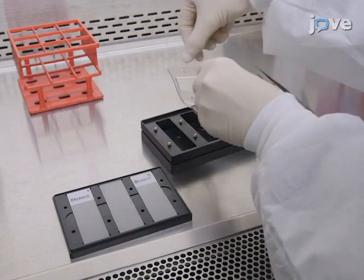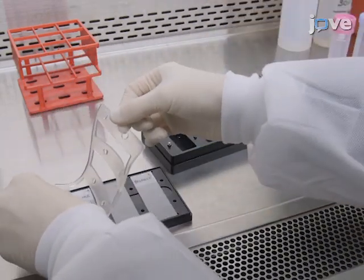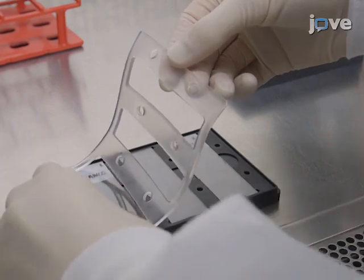Place the glossy side of the seal facing downwards onto the microarray printed surface. To ensure a good position, overlap the screw holes of the seal and the base plate.